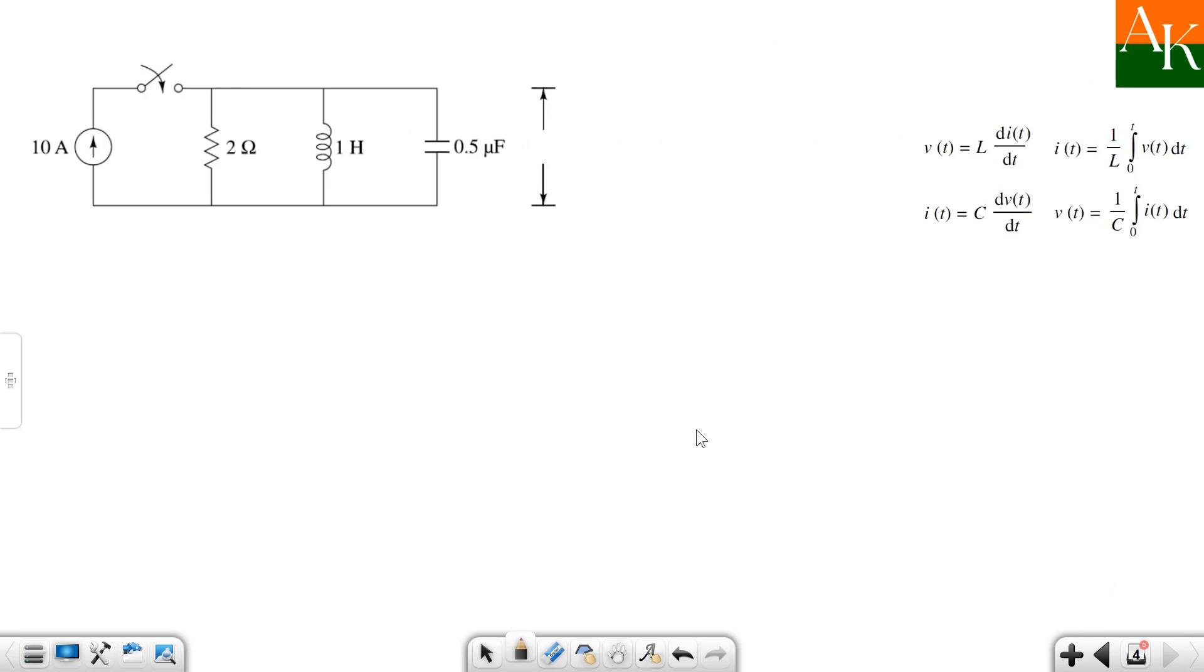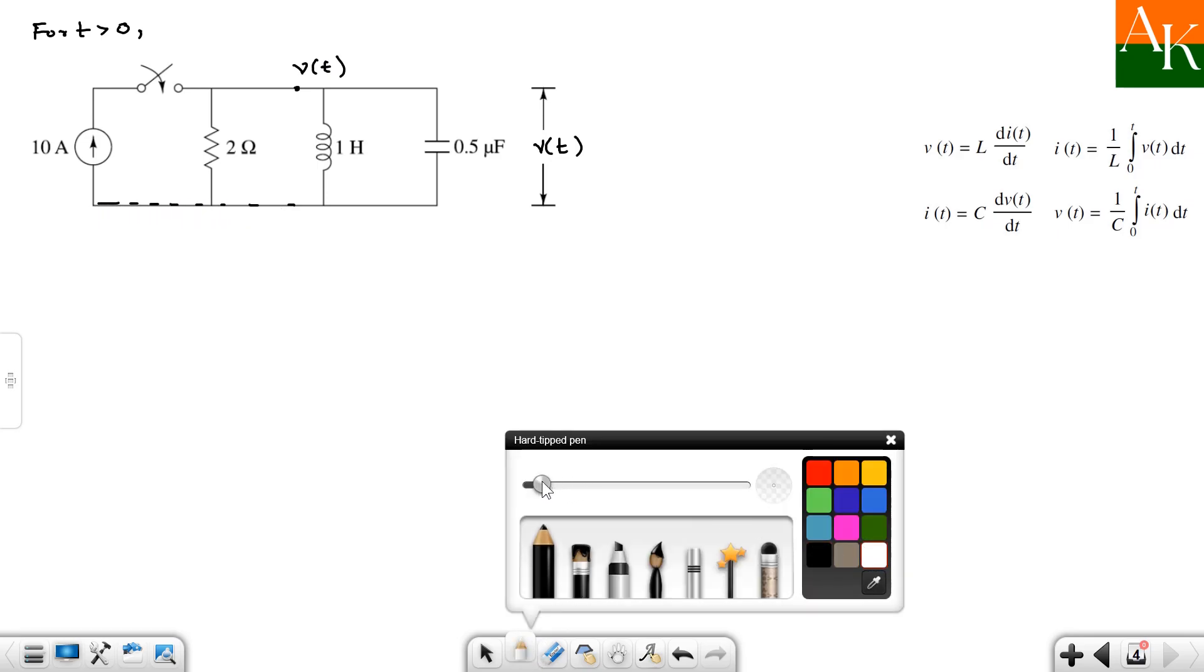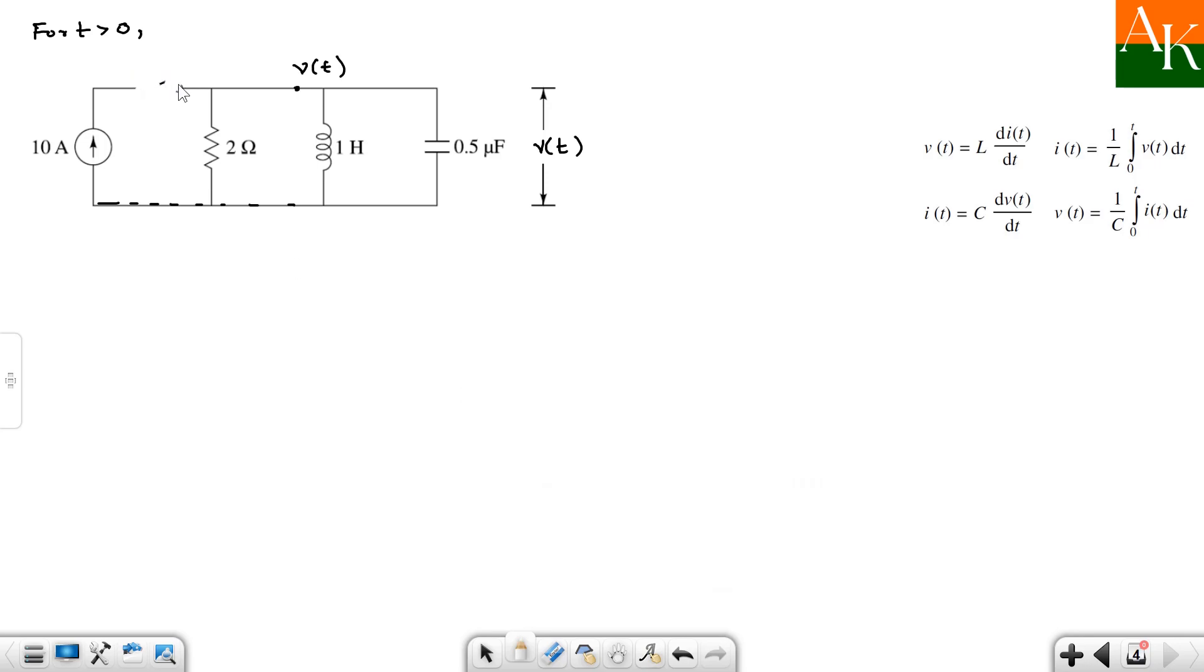Now we will proceed for analyzing the circuit for t greater than 0. And now this inductor and capacitor they will start showing this property. Here you have to show voltage. This is V of t. Even this node voltage will be V of t because we are taking reference node over here. And we have to show that the switch is closed. Be careful about this one.